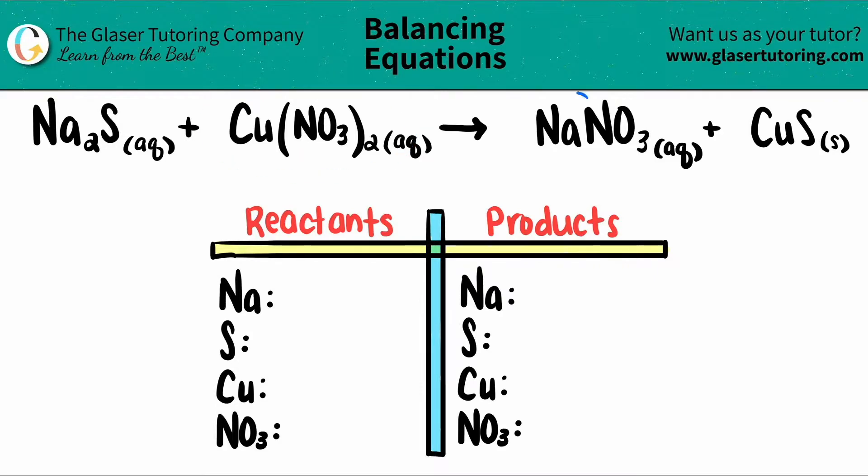And when they come together, it will produce sodium nitrate, which is NaNO3, and then copper 2 sulfide, which is CuS.